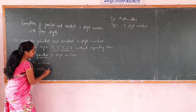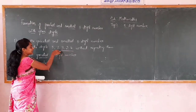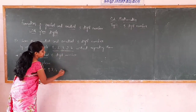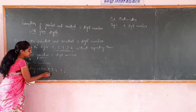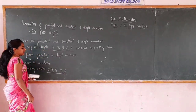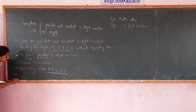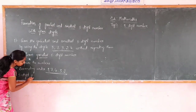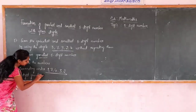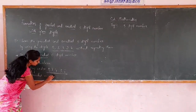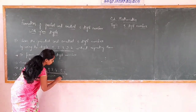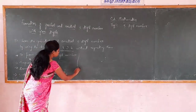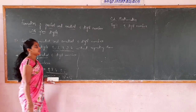Here, 9 is greater compared to all these numbers. The next greatest number is 7, then 4, then 3, and finally 2. This is the descending order of the given digits. Now we get the greatest 5-digit number, that is 97,432. We follow these steps to find the greatest 5-digit number.